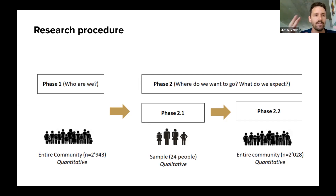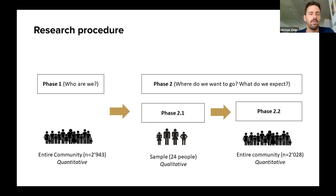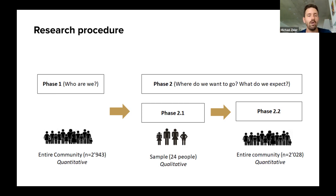In the second phase, we took a diverse sample of 24 people and asked them a lot of questions about what they thought is a good life and how UBI could contribute to that. From these answers, we created another form and asked the whole community — and as you can see, 2,000 people answered the question of what they thought UBI could contribute to a good life.